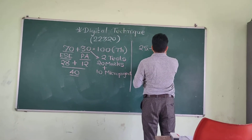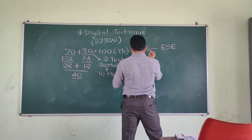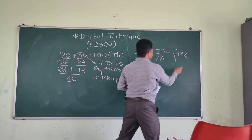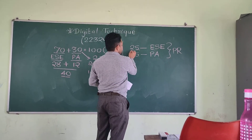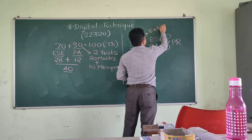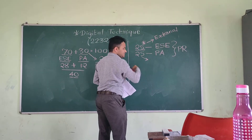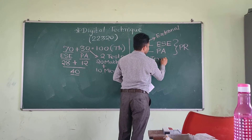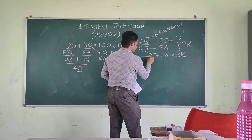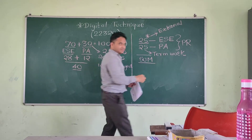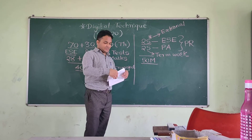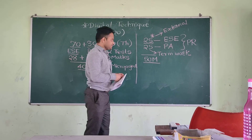The end semester examination carries 25 marks for the practical session. The ESE includes an external practical for 25 marks, and this 25 marks is called the term work. So the total marks for the practical session is 50.